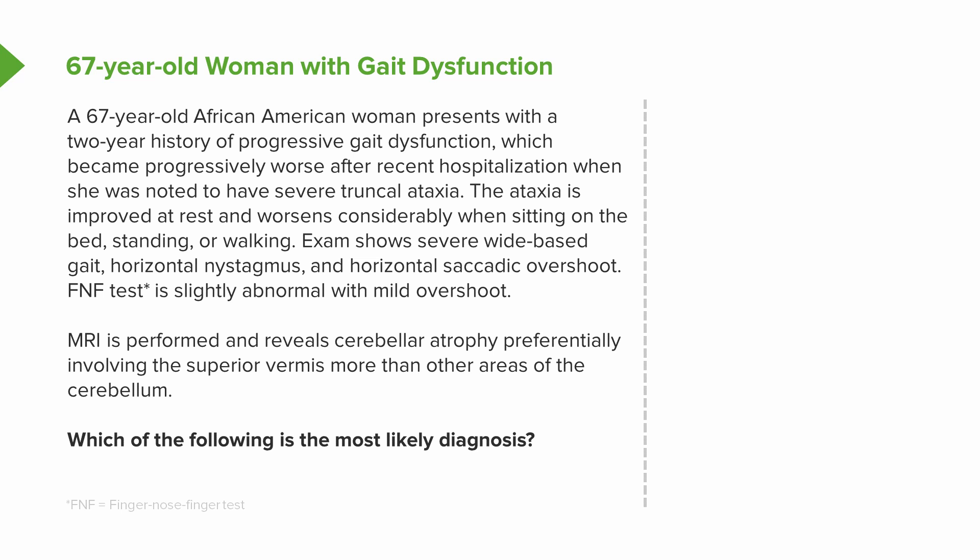There are a number of key features of this case. The first is the timeline of onset. There's a progressive two-year history of this cerebellar disorder, meaning it's chronic in onset, and that already gets us thinking about some of those acquired causes of cerebellar dysfunction.